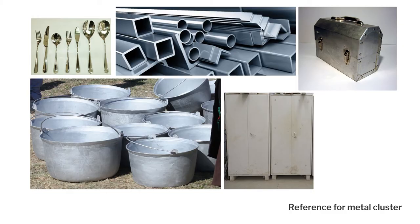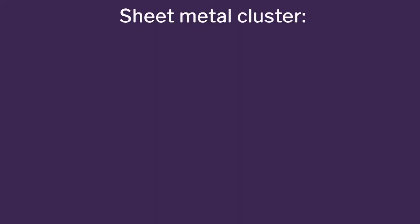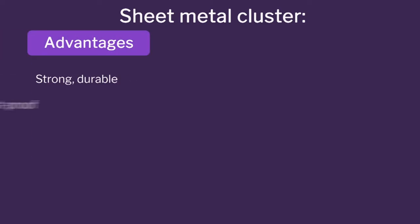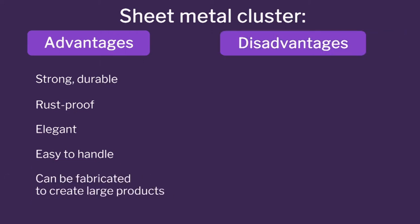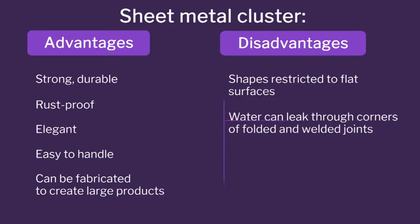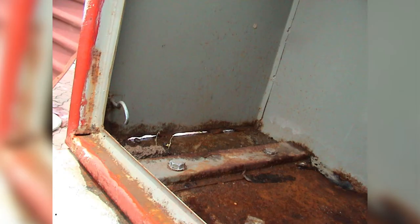In the sheet metal cluster, what are the advantages and disadvantages? The product is very strong, it is durable, it can be rust-proof, and you can also make it elegant because of the large surfaces. It is easy to handle because it is lightweight and can be fabricated in large numbers. Disadvantages: it has restricted shapes — it has to be flat because you cannot have curved tooling. It also has a possibility of leaking through joints, which was a serious problem for earlier boxes.